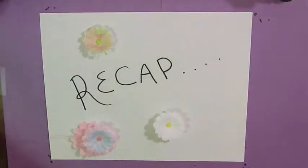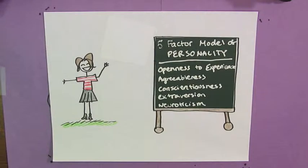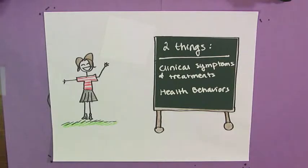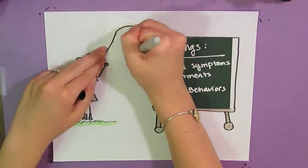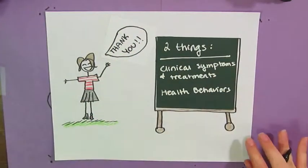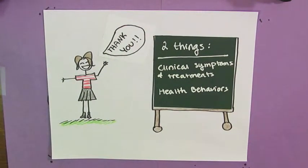Let's recap. Today, we discussed each element of the five-factor model of personality: openness to experience, agreeableness, conscientiousness, extroversion, and neuroticism, as well as their connection and relation to college students concerning clinical symptoms and treatments and health behaviors. Thank you so much for watching, and I hope you learned some more about the five-factor model of personality.